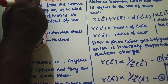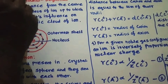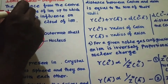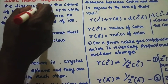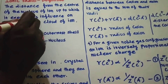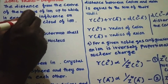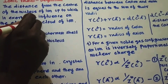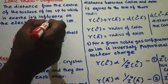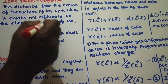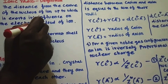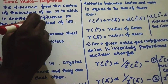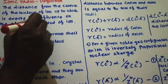It is well known that ions are formed by either gain or loss of electrons. If an atom gains one or more electrons, it forms a negative ion. If an atom loses one or more electrons, it forms a positive ion.